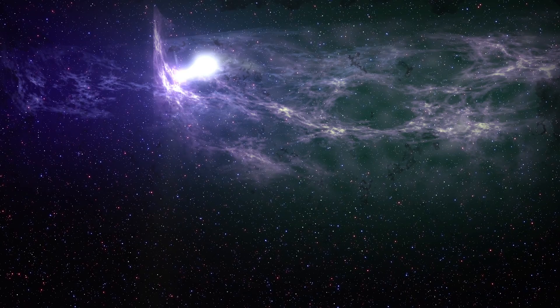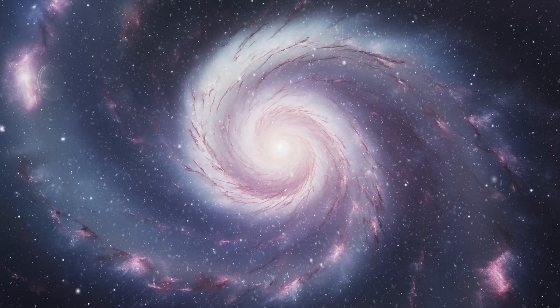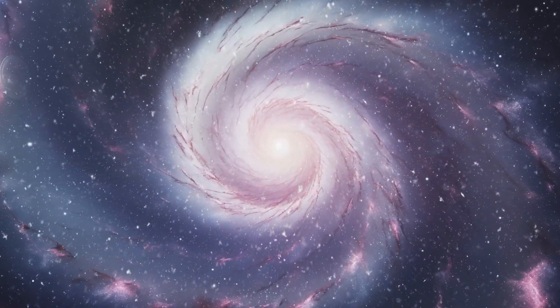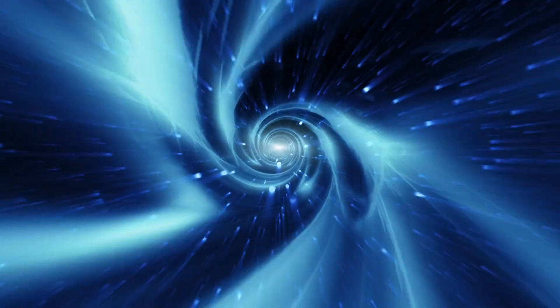Proxima b is thought to be tidally locked, always showing the same face to its star, creating extreme temperature differences between its day and night sides. The planet also receives 100 times more high-energy radiation than Earth.